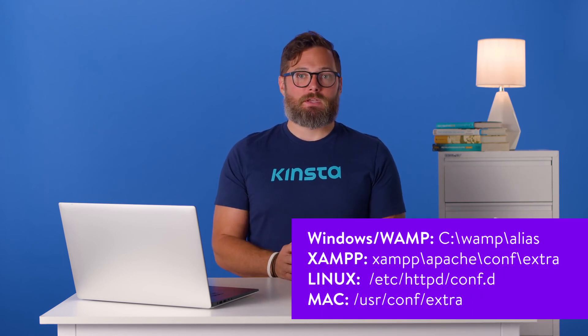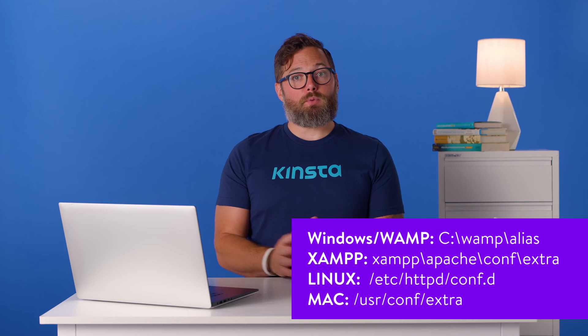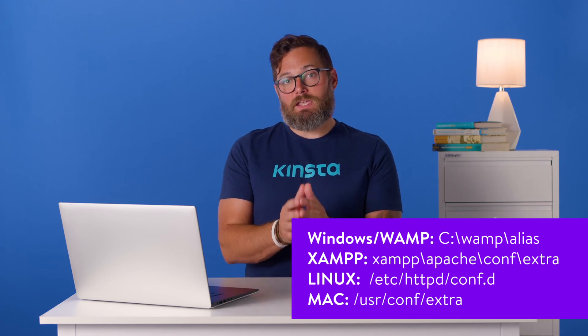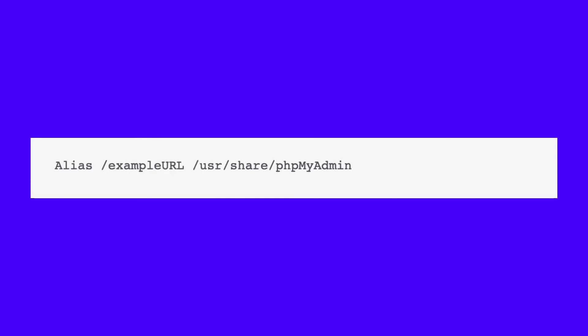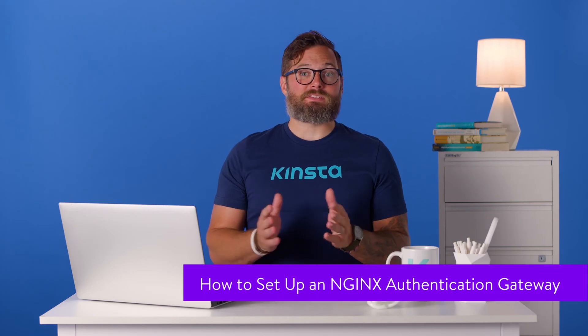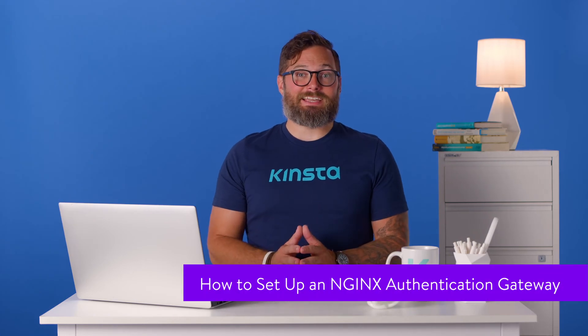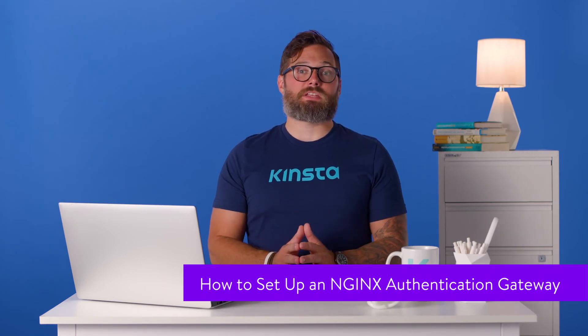Open the phpMyAdmin config in a text editor. Depending on the operating system you're on, you can find it at the shown path. You should see a specific line in the config file — change the phpMyAdmin path to a new address of your choice. Now you can access phpMyAdmin by visiting the custom address you set. Another option is to set up a second layer of security with an authentication gateway.